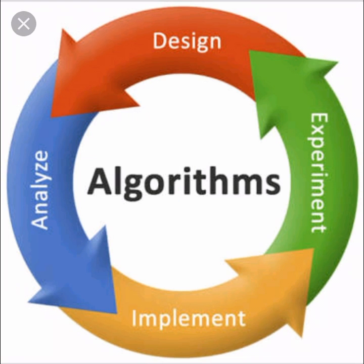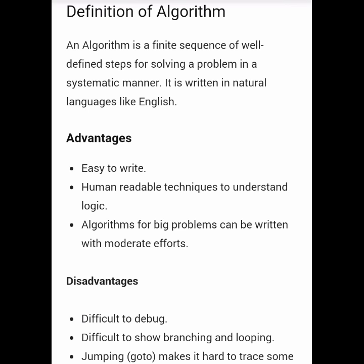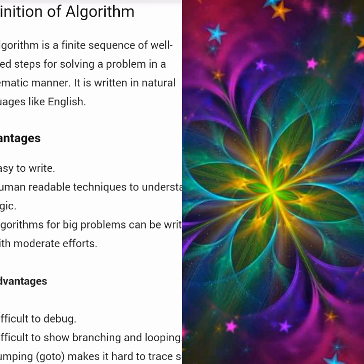Now let's know about some advantages and disadvantages of algorithm. Advantages: first, easy to write; second, human readable techniques to understand logic; third, algorithms for big problems can be written with moderate efforts. Disadvantages: first, it's difficult to debug; second, difficult to show branching and looping; third, jumping makes it hard to process. These were the advantages and disadvantages of an algorithm.